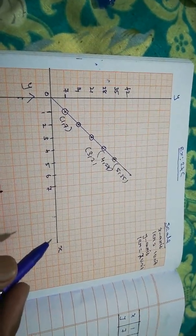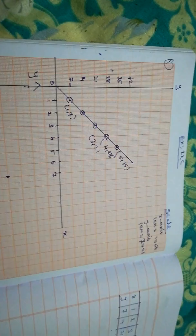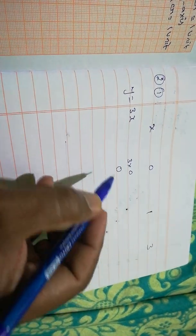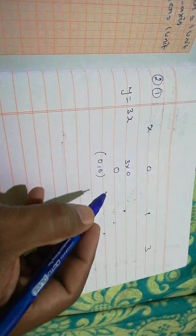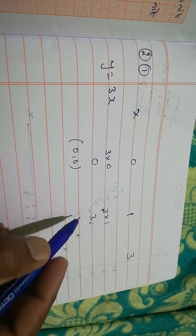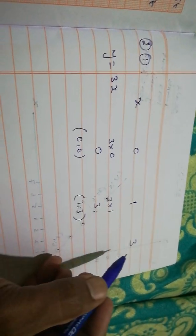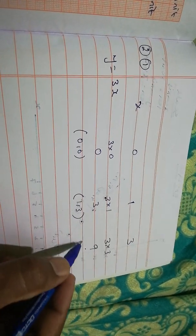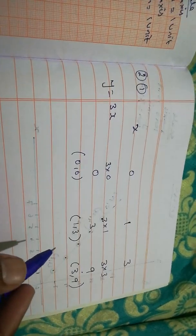Question 2, first part: x is given as 0, 1, 3 and the equation is y = 3x. Substituting: 3×0 = 0, so x=0, y=0. Then 3×1 = 3, so x=1, y=3. And 3×3 = 9, so x=3, y=9.